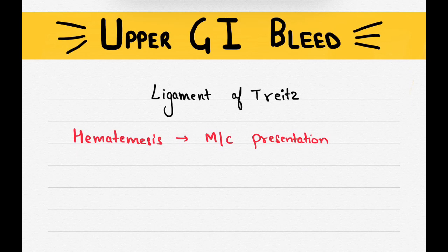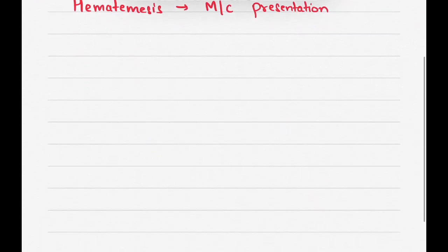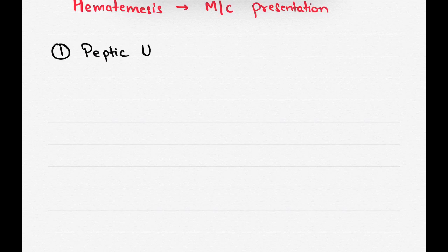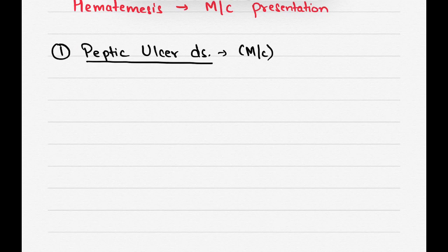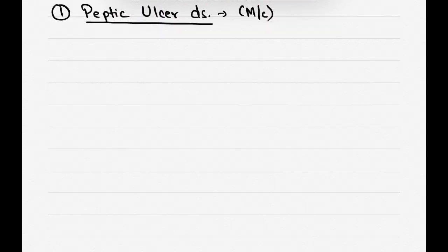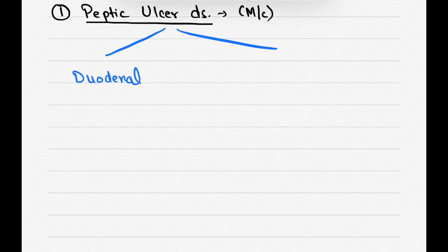So the causes of upper GI bleed include, the first cause is peptic ulcer. Peptic ulcer disease is the most common cause of upper GI bleed. So there are two types of peptic ulcers. The first one, it can be in the duodenum, so it is known as duodenal ulcer. Or it can be in the stomach, so it is known as gastric ulcer.